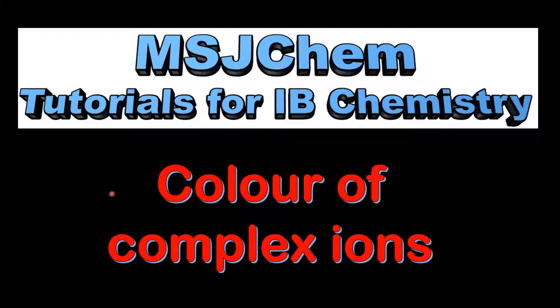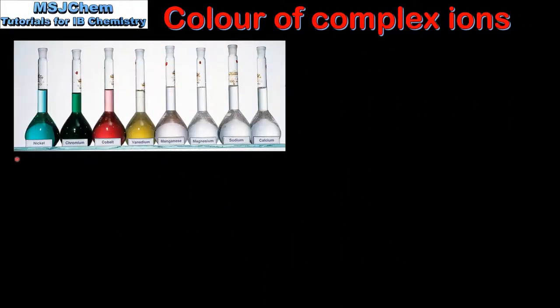This is MSJChem. In this video I will be looking at the colour of complex ions. A distinctive property of the transition elements is that they form coloured compounds. Here we can see examples of transition metal ions in solution, and as we can see they have distinctive colours.